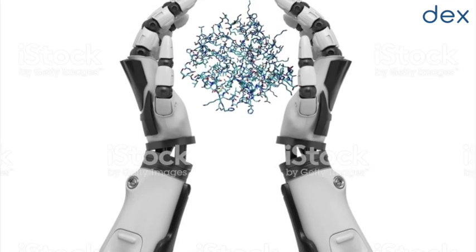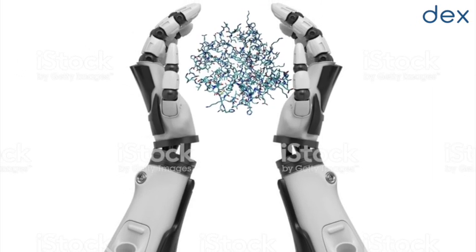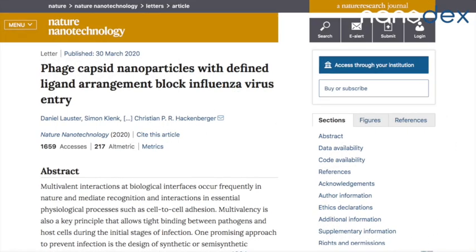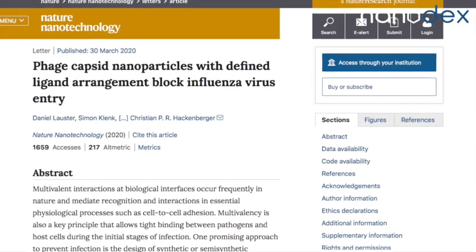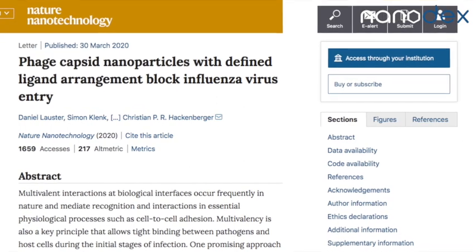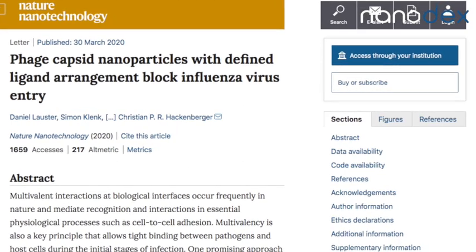A possible solution, then, would be to block the viral spike proteins so they cannot access the target cell's receptors. That is exactly what Daniel Loster and a team of 27 researchers developed, published in the journal Nature Nanotechnology.